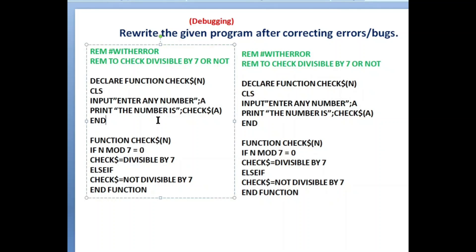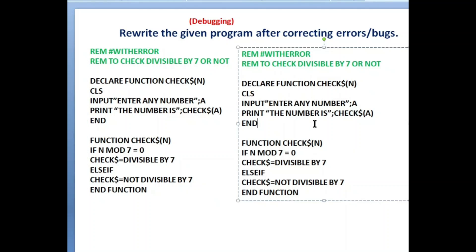Next one — divisible by 7 or not. We need to pass only one value. Declare function check dollar — we use dollar because it will return 'is divisible' or 'is not divisible', which is a string. Enter any number stored in a. We call the function from the print statement: print 'the number is'; check$(a). While in the declaration you can use n or a — no problem — but the variable you take input in, you should pass that while calling the function.